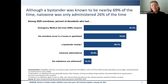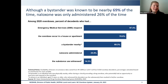We also collect information in SUDORS about the scene of the overdose. In 2020's data, naloxone was only administered 26% of the time in these deaths, even when there was a bystander known to be nearby — in the house, in the next room, sometimes in the room with the individual — someone who could have potentially intervened.